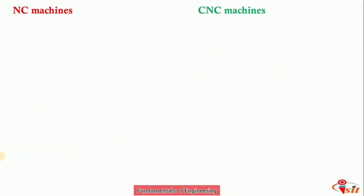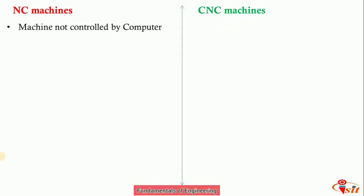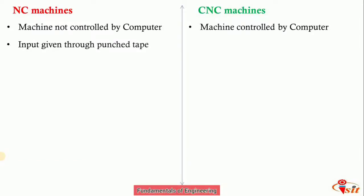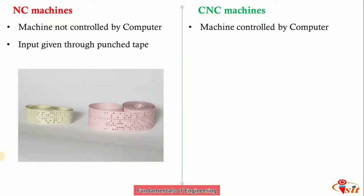NC machine stands for Numerical Control machine, where the machine is not controlled by a computer. CNC machines are controlled by a computer, and the program is fed using a programmable language with alphanumeric data — alphabets and numbers. In NC machines, the input is given through punch tape, as seen in a previous lecture.